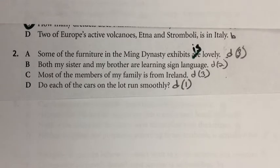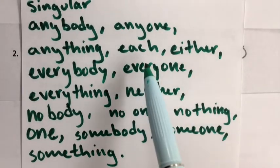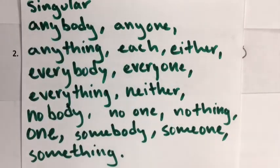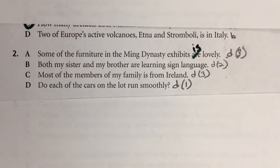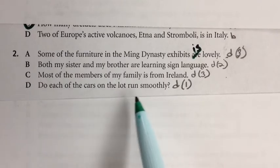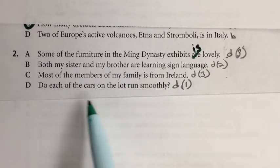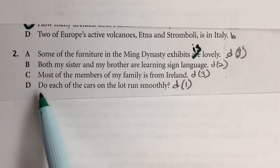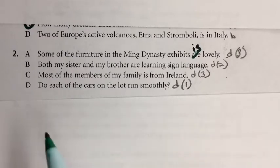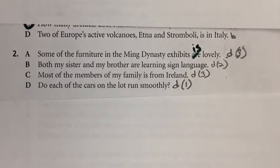Sentence D has the word 'each,' which is on the always-singular list. So 'each' needs a verb that ends in S. 'Each of the cars on the lot run smoothly' — the verb should have an S. It should say 'does each of the cars on the lot run smoothly,' meaning 'does each' — that might sound funny, but it is correct. So the answer to this question is the letter B.